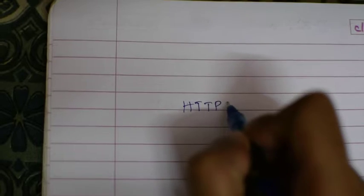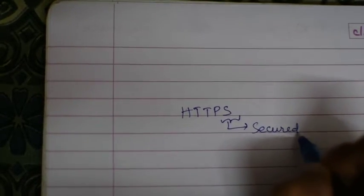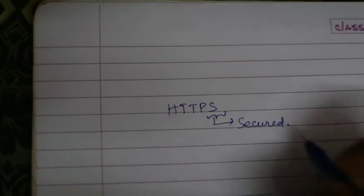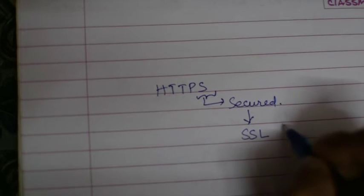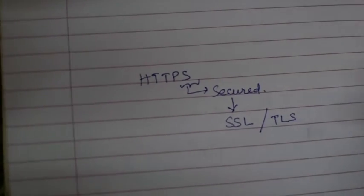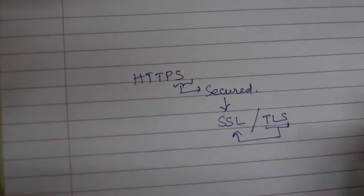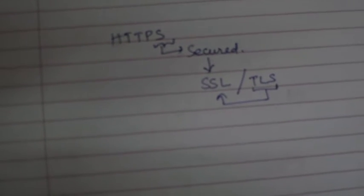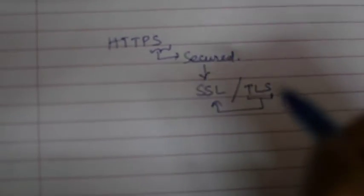Hello everyone, today I'm going to explain how the SSL or TLS connection works. Anytime we see an HTTPS connection, the 'S' stands for 'secured.' This secured connection is because of SSL, which is currently called TLS. TLS is basically an upgrade over SSL — it gives better security features, and some vulnerabilities discovered in SSL are not present in TLS.